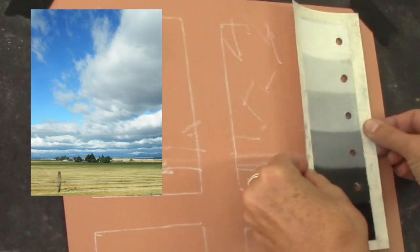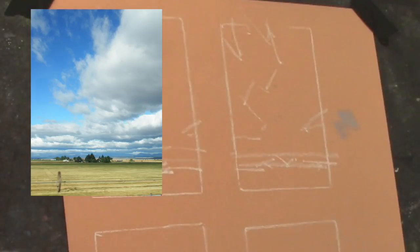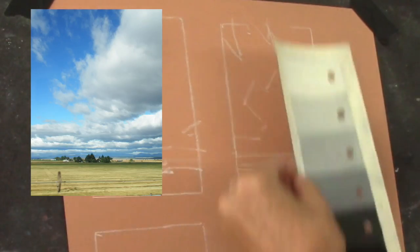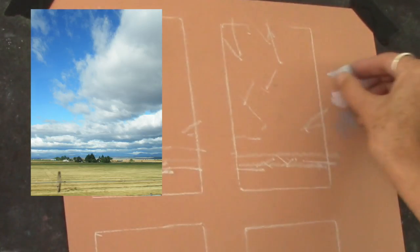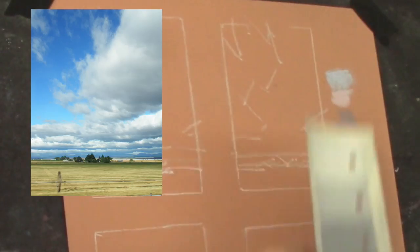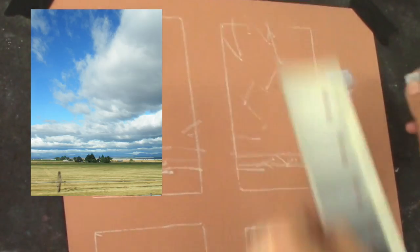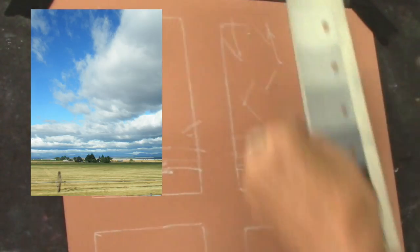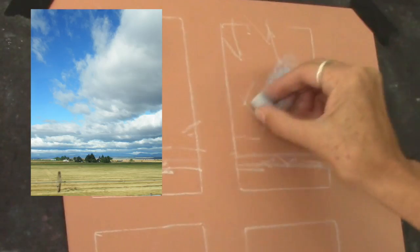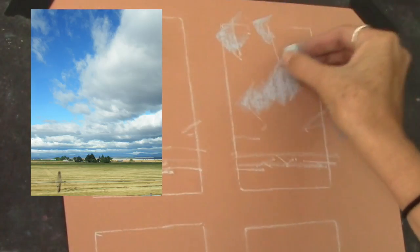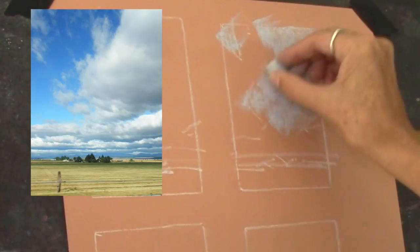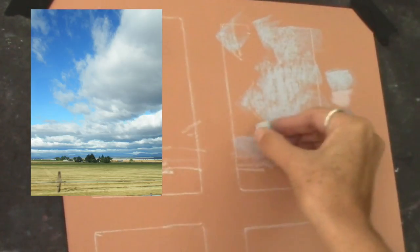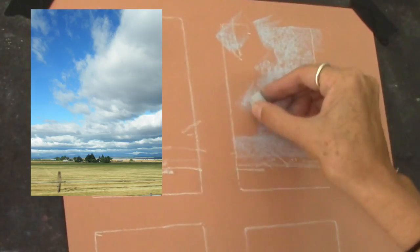Maybe a little too dark. Something like that. That's a little too light. So I have to come in between. Look at that. That's pretty good. That's the right value. See that? And it's kind of a blue gray. So I'm going to come in here and just mass in the cloud shape.